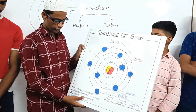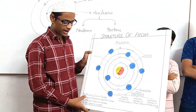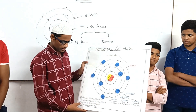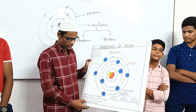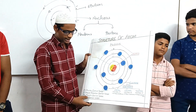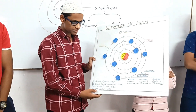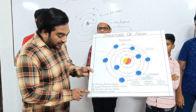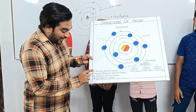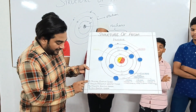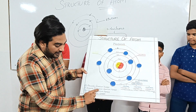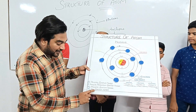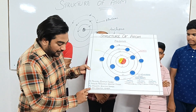In this model, we have 4 quantum numbers. The first is the principal quantum number, symbol N. The second is the angular momentum quantum number, symbol L. The third is the magnetic quantum number, symbol M. The fourth is the spin quantum number, symbol MS.